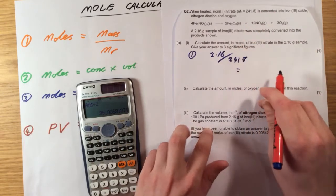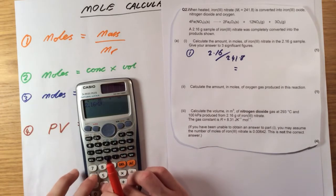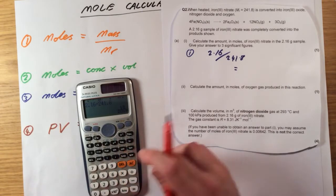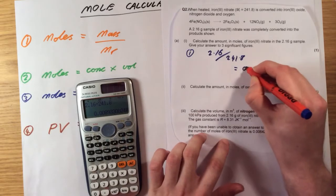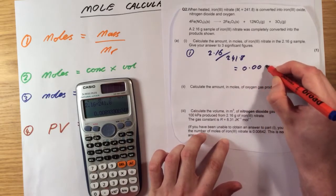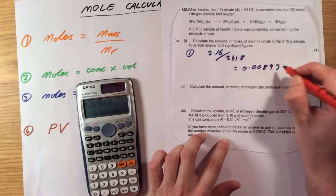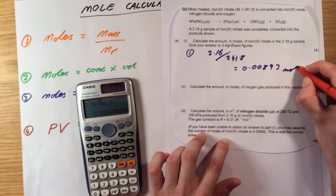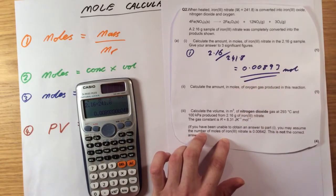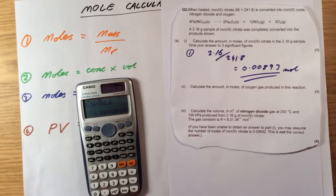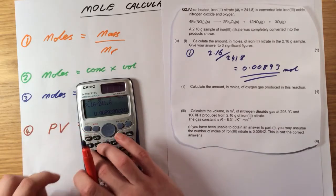This is about as easy as it's going to get. So 2.16 divided by 241.8 gives me 0.00893, making sure that is three sig figs. And again I'm going to store that in case I need it later.